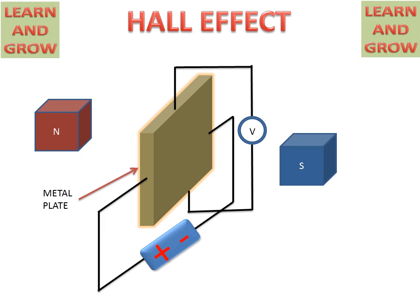What will happen? Electrons will travel from negative to positive side and the flow path will be regular or same as we see in the figure. If we apply magnetic field to this metal plate, then what will happen?